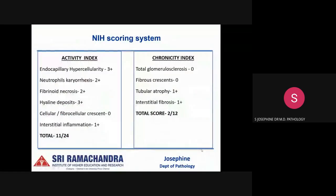Moving on to the NIH scoring system for activity and chronicity indices: there was prominent endocapillary hypercellularity, neutrophils, karyorrhexis, hyaline deposits, and fibrinoid necrosis, but no crescents were identified. There was mild interstitial inflammation. The activity index was graded 11 out of 24. For chronicity, there was mild tubular atrophy and interstitial fibrosis, giving a total score of 2 out of 12.